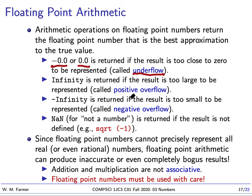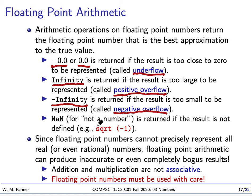Another problem that can happen: if we're multiplying a number by two over and over again, the number gets bigger and bigger. Eventually we run out of floating point numbers because there's only a finite number of them. Our number would be too big to represent, so we represent it by a special value called infinity — this is positive overflow. Similarly, if a negative number is multiplied by two repeatedly, we get negative overflow, and the value we get is a special value called minus infinity.